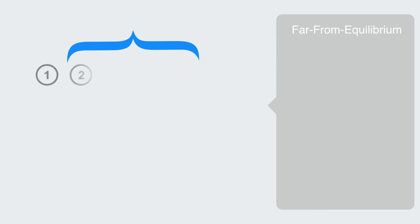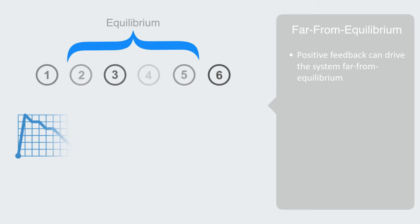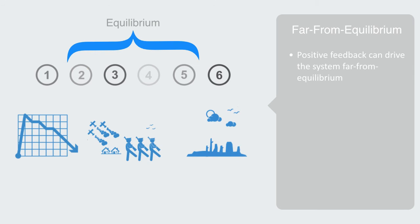In these first two systems, there is a dynamic that is working to maintain a distribution amongst the states between the elements that results in equilibrium. But this is not always the case. As we saw, positive feedback can drive the system far from equilibrium. Stock market crashes, outbreaks of war, political movements, growth and decay of ecosystems, traffic jams, and many biological processes are the product of positive feedback that takes place far from equilibrium.